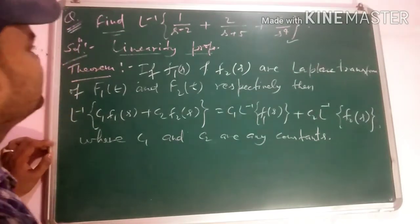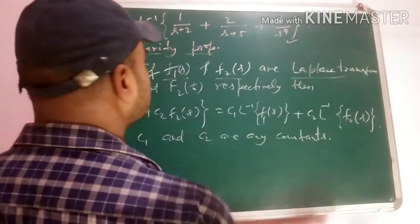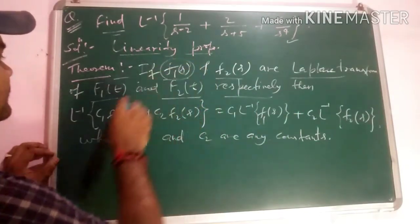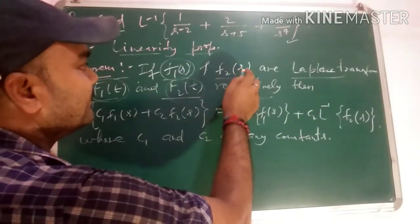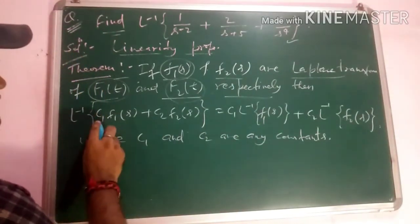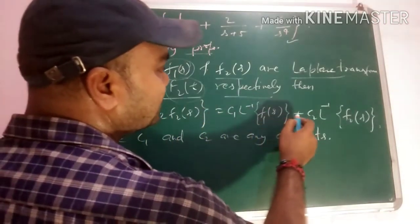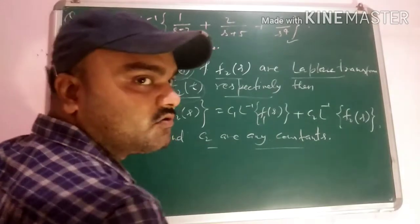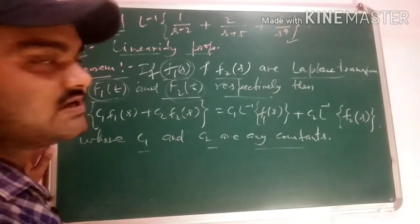Just like we studied linearity property in the forward Laplace transform, similarly in inverse there is a theorem. The theorem states: if F1(s) and F2(s) are Laplace transforms of f1(t) and f2(t) respectively, then L inverse [c1·F1(s) + c2·F2(s)] = c1·L inverse F1(s) + c2·L inverse F2(s), where c1 and c2 are any constants.